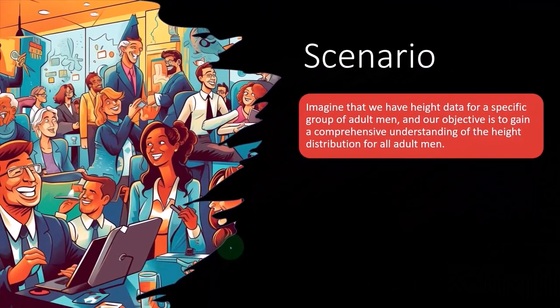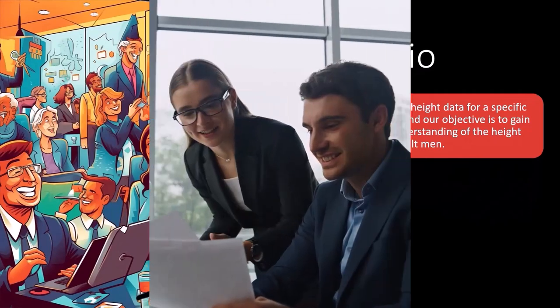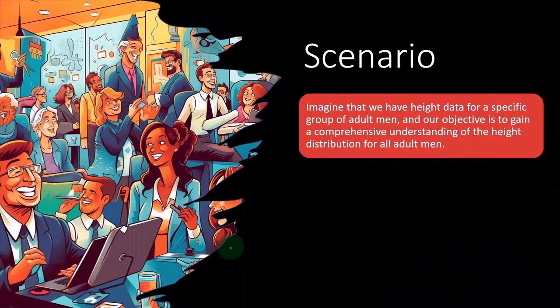People already have kind of a sense of what the height distribution should look like just from observing people. So you kind of have an idea of what you expect to be happening, and then when you run the testing, you can kind of see that in your mind.